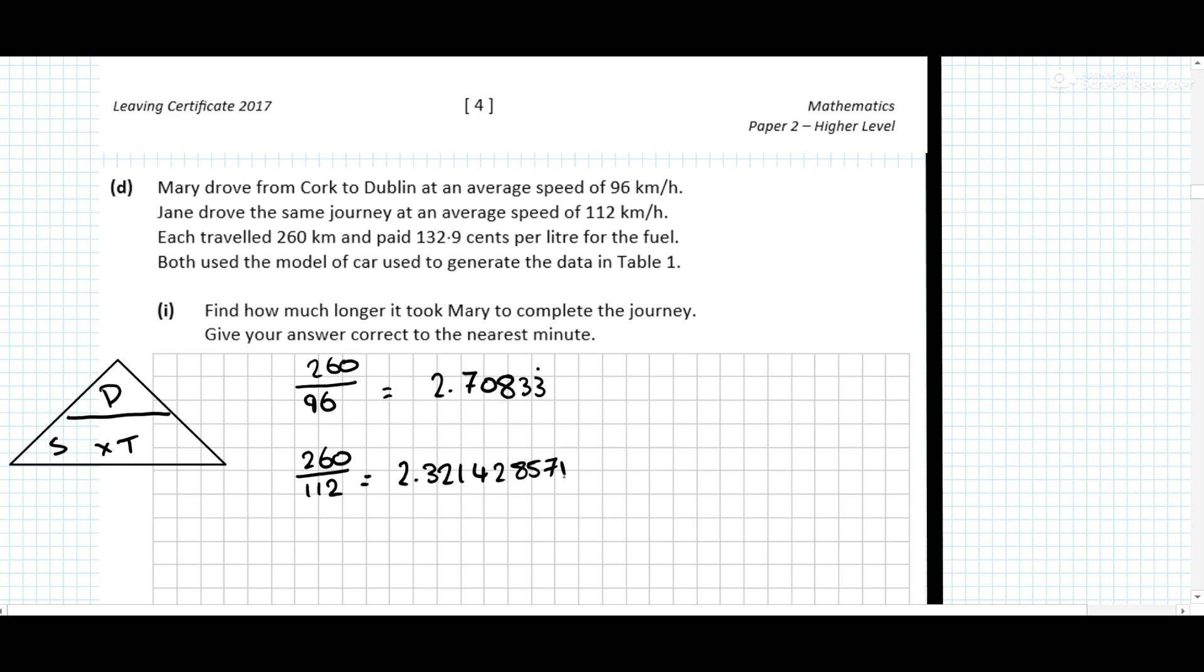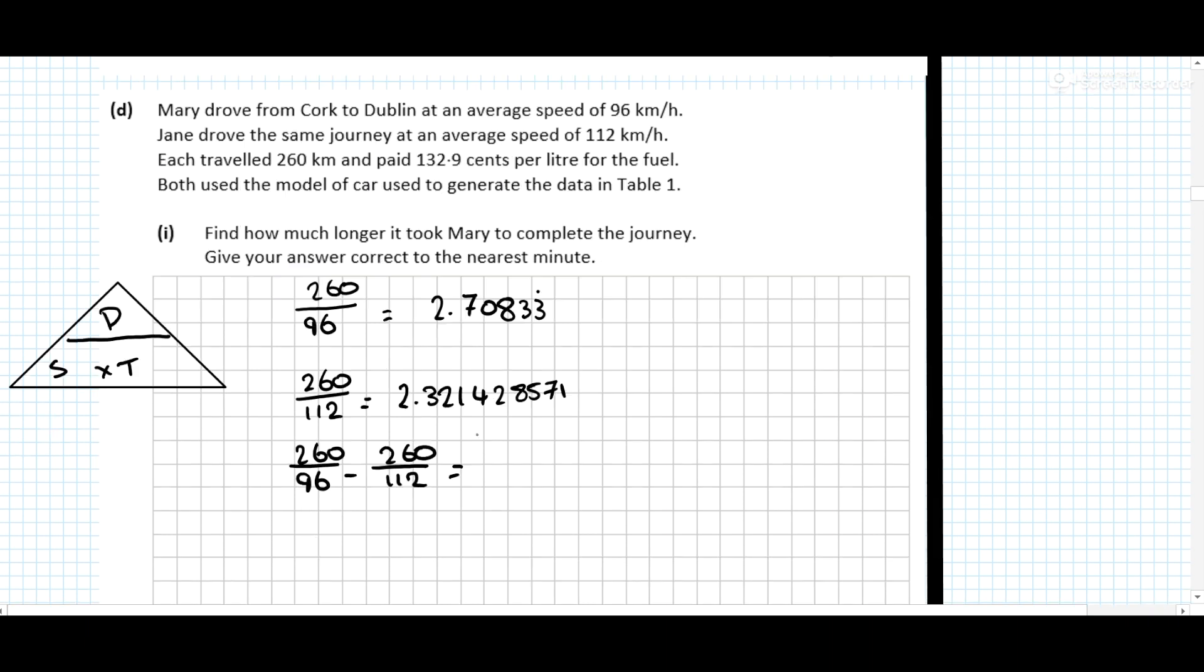Okay, so find the difference between them. So even if you wanted to go 260 over 96 minus 260 over 112. 0.3869 hours. And if you change that to minutes, you'll get 23 minutes. Quite a nice question right there.